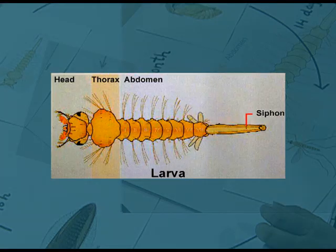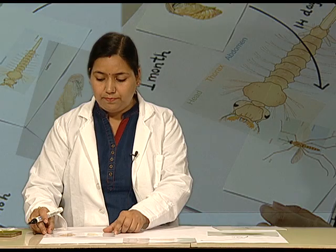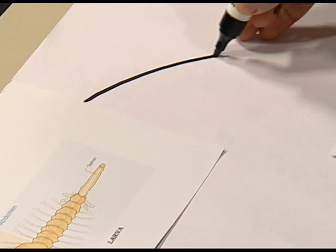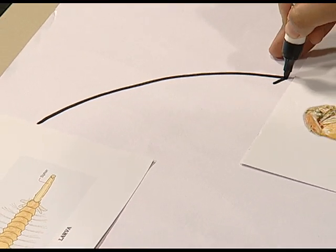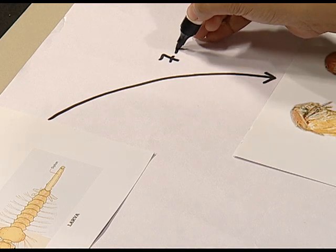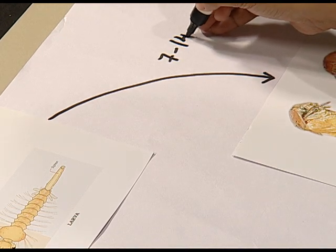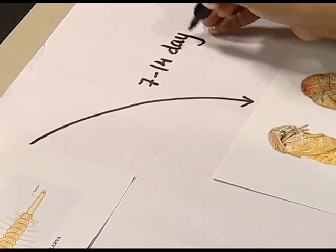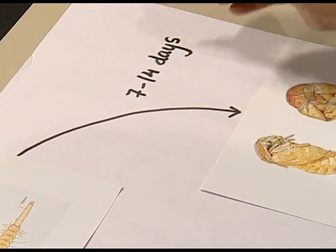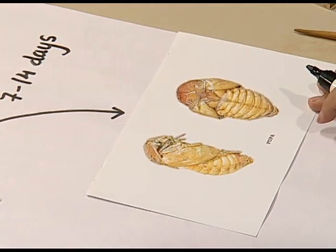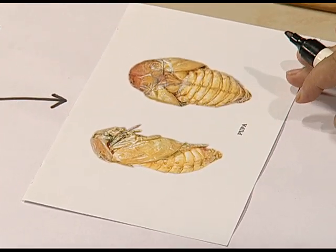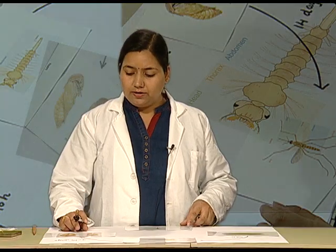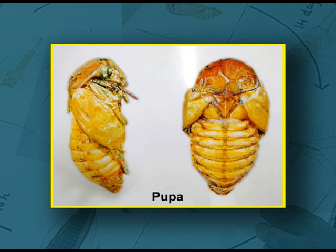This larva changes into a pupa. The time varies from species to species, taking from seven to 14 days or a few weeks. This pupa is the non-feeding stage. After molting four times, the pupa gives rise to an adult.